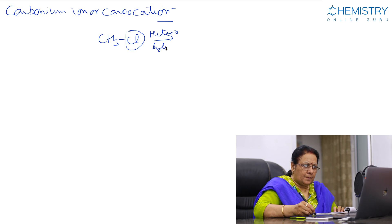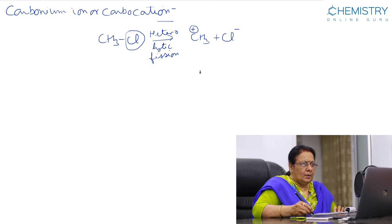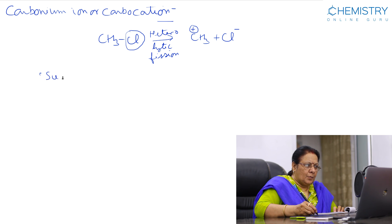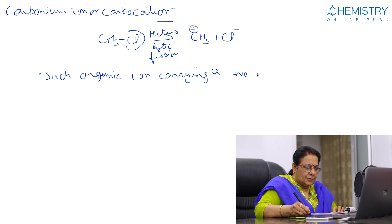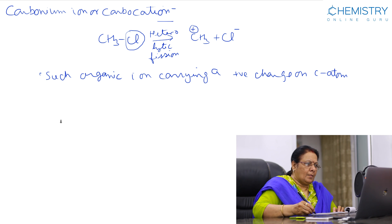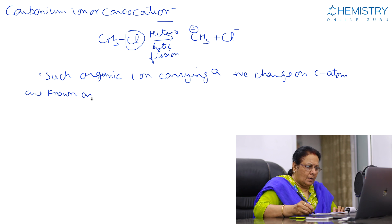This process is heterolytic fission, producing a positive charge on the carbon atom and a chloride ion. Such organic ions carrying a positive charge on the carbon atom are known as carbonium ions.